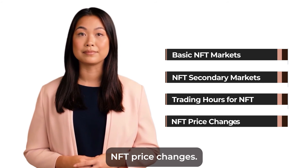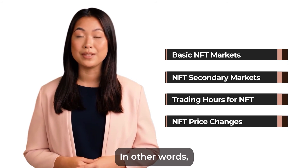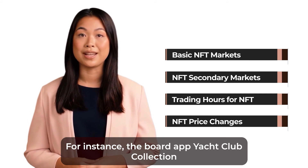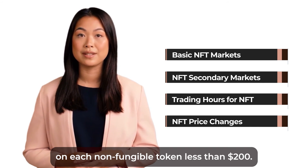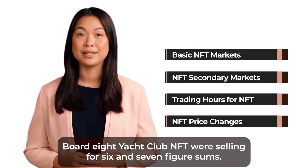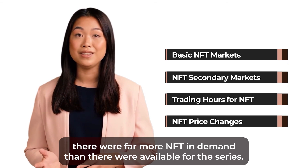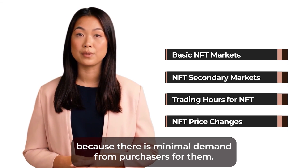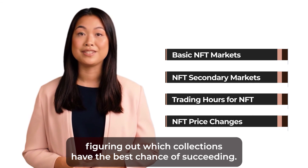NFT Price Changes: This trading environment is quite speculative and arbitrary when it comes to NFT pricing. In other words, how much people are willing to pay will decide the worth of your NFT. For instance, the Bored Ape Yacht Club collection was first listed for 0.08 ETH — less than $200 — because its author placed a low value on each non-fungible token. Nevertheless, Bored Ape Yacht Club NFTs were selling for 6- and 7-figure sums a few months later, because there were far more buyers demanding the series than there were NFTs available. However, most NFTs struggle to sell because there is minimal demand from purchasers, making it the hardest element of NFT trading to figure out which collections have the best chance of succeeding.